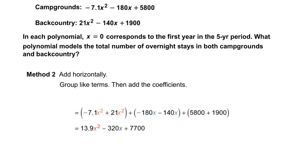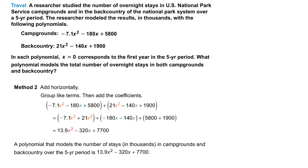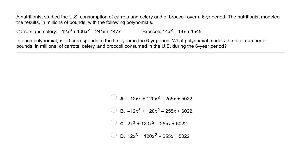We arrive at the same polynomial: 13.9x squared minus 320x plus 7,700. Either way, we can state that the polynomial that models the number of stays in thousands in campgrounds and backcountry over the five-year period is 13.9x squared minus 320x plus 7,700.